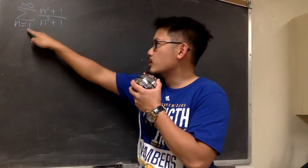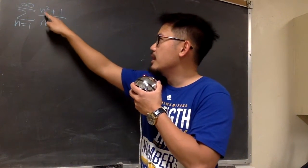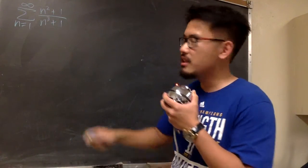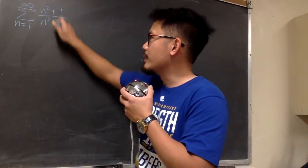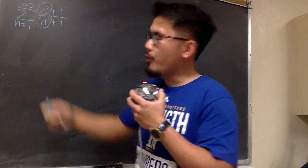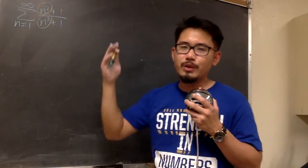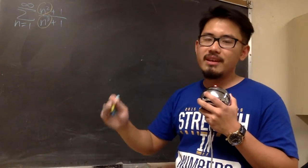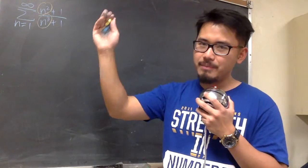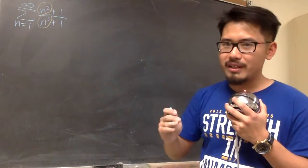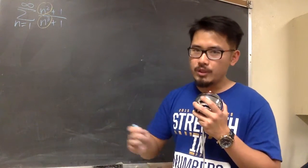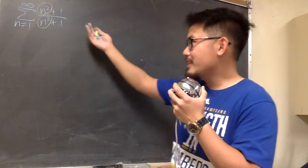Converge or diverge? Sigma when n goes from 1 to infinity of n squared plus 1 over n to the third power plus 1. As we can see, if we ignore the plus 1s, we can just look at n to the second power over n to the third power, and we can reduce that to 1 over n. And we know sigma when n goes from 1 to infinity of 1 over n diverges. That's something we know right away.